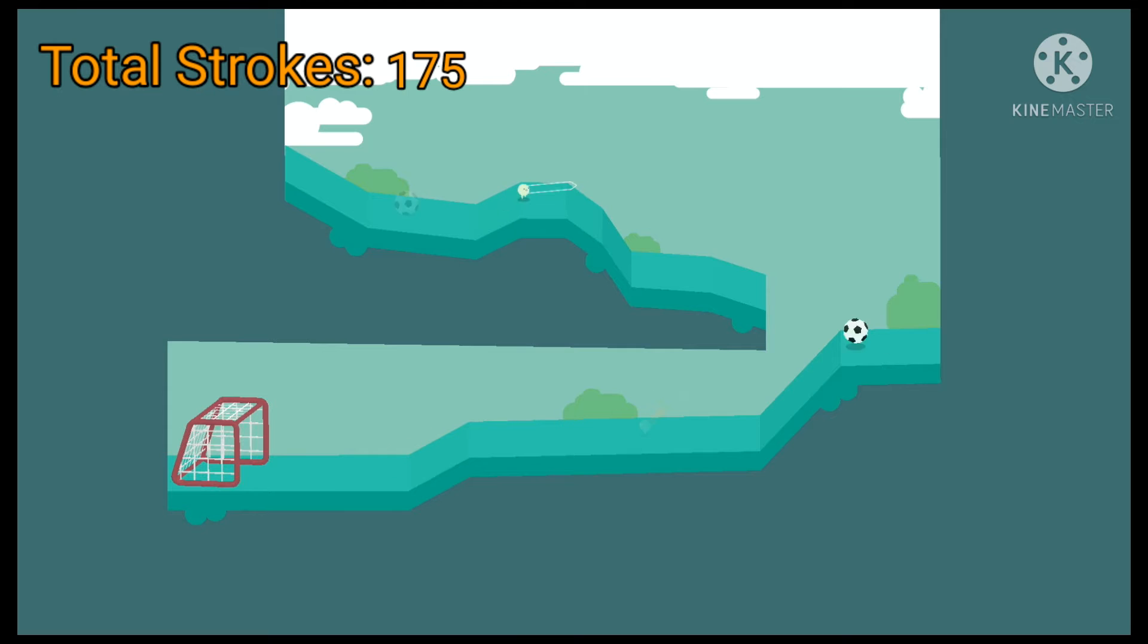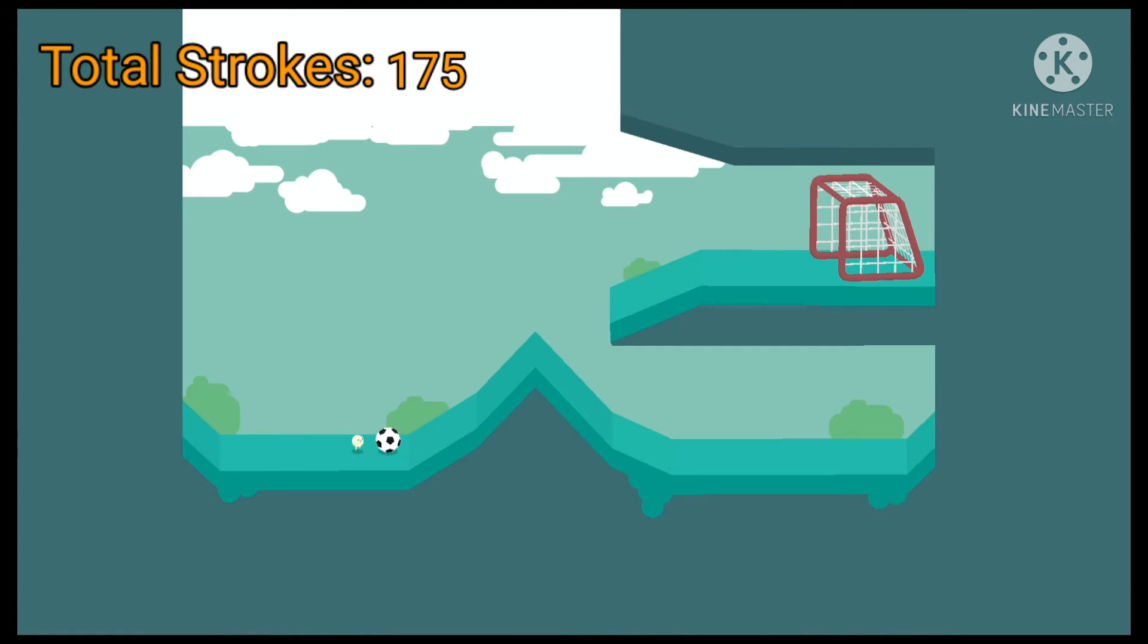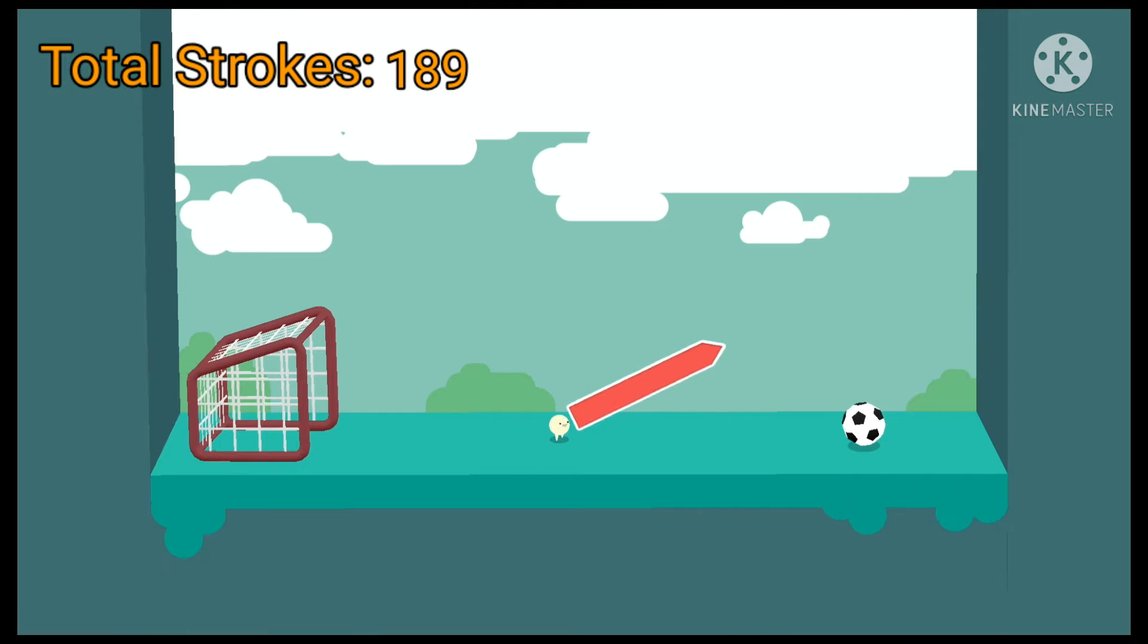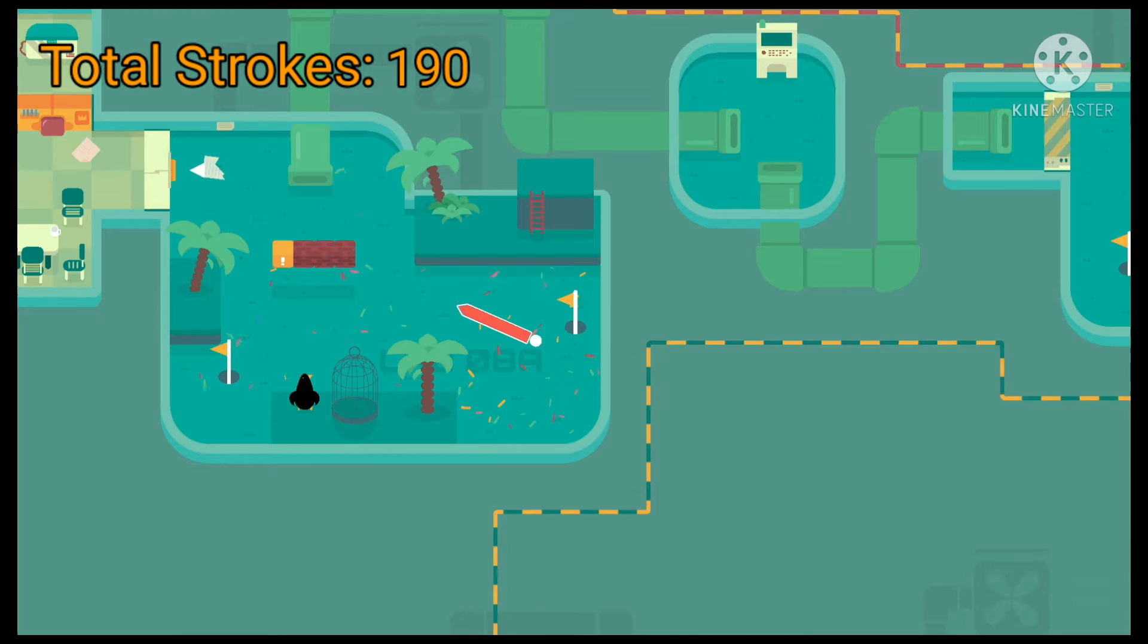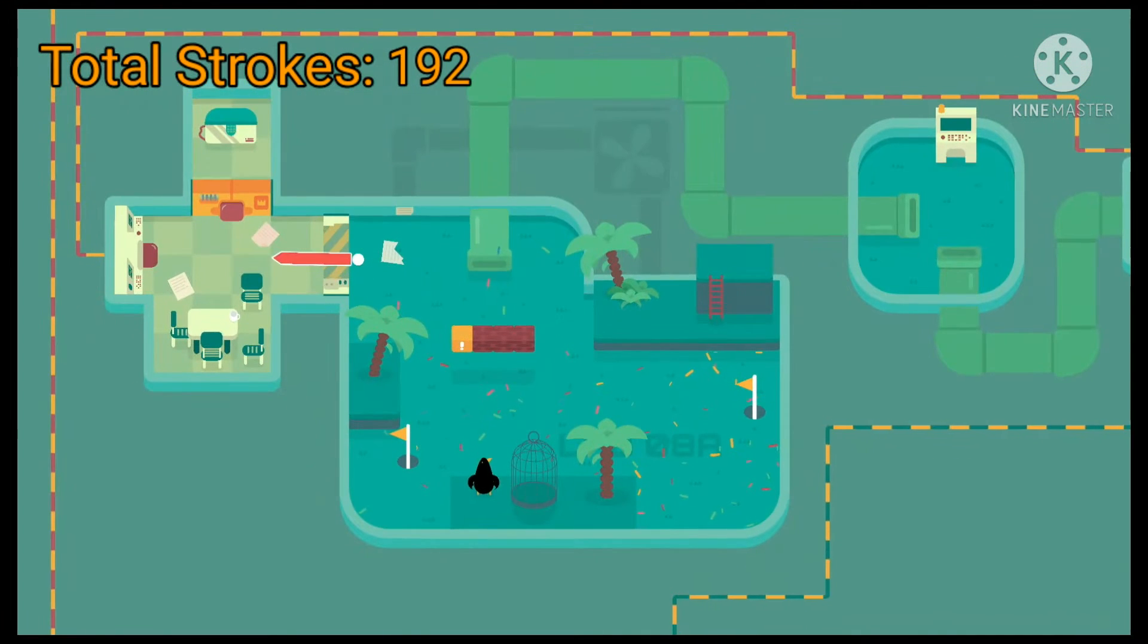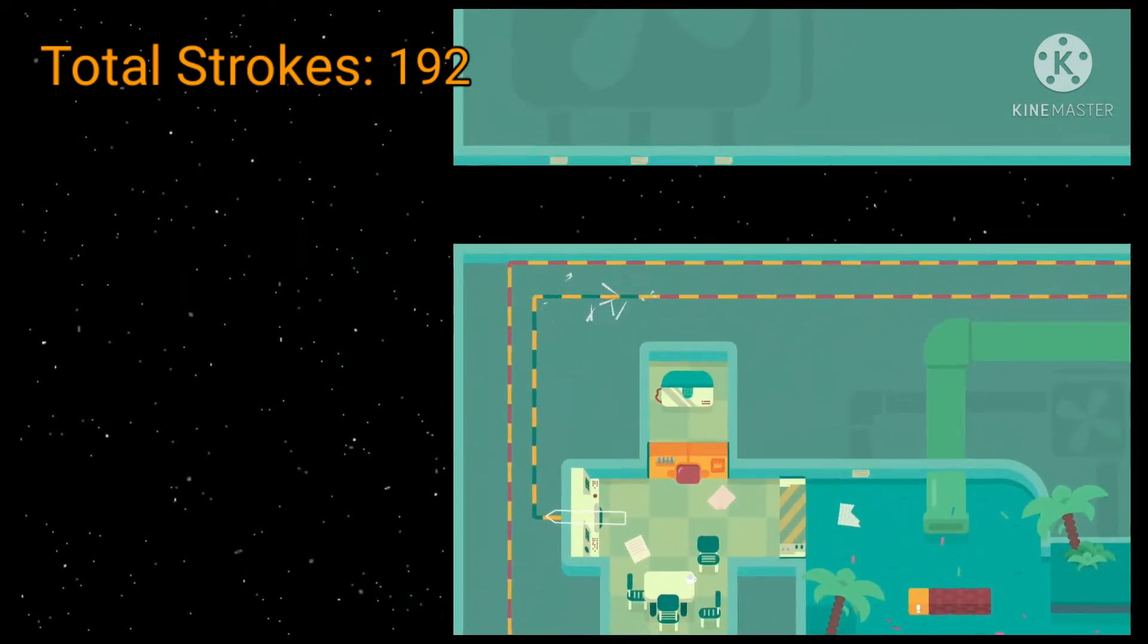Finally, there is Scorer, Scorer, Scorist, which takes one shot to get to. Score can be completed in six strokes, while Scorer needs seven. Scorist can be completed in one easy stroke, and with two more to the button, that puts our total at one hundred ninety-two strokes.